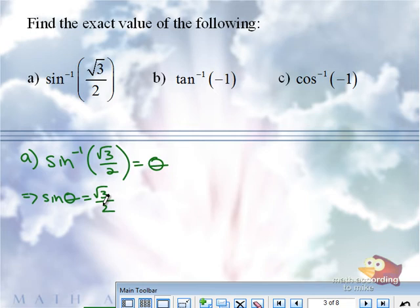We're looking for the range because we're doing a sine inverse. Sine inverse's range is negative pi over 2 to pi over 2. So when you see this, you ask yourself,